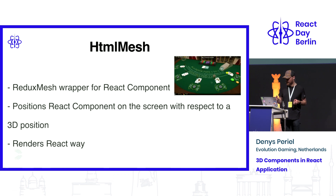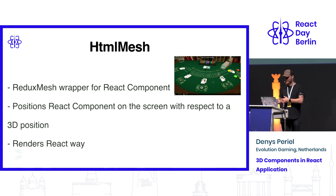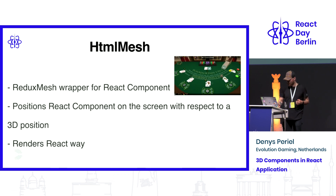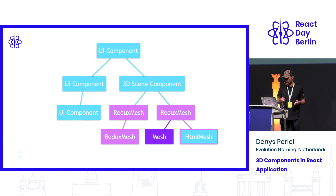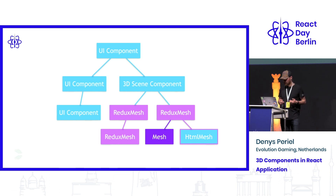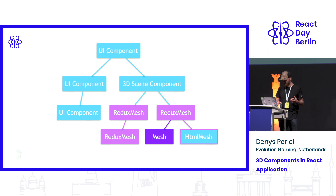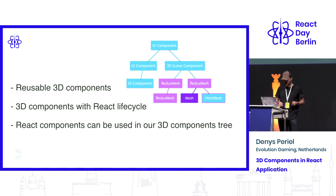HTML Mesh makes React components render in the actual React way. By having these two classes, our React tree can now look like this: in the 3D scene component, we can nest our Redux meshes the same way we use normal stateful components. HTML meshes allow us to reuse React components inside the 3D scene, and we can still use plain meshes to render once and not touch them again.